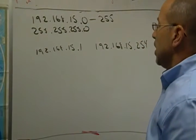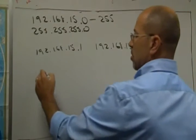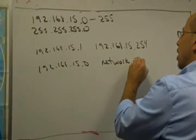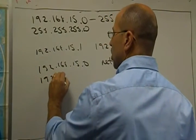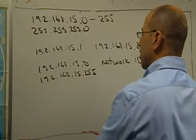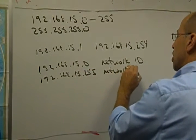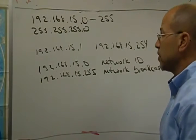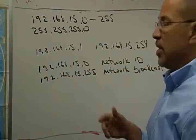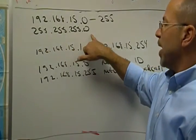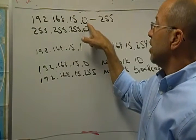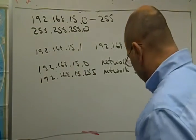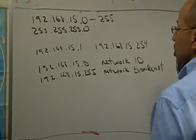The address 192.168.15.0 is our network ID, and 192.168.15.255 is the network broadcast — a couple of special addresses that come out of this space. What's not as obvious is that because we use this mask, any of the hosts that reside in the range 0 to 255 wind up on this particular network. How does that happen? Through the magic of AND.